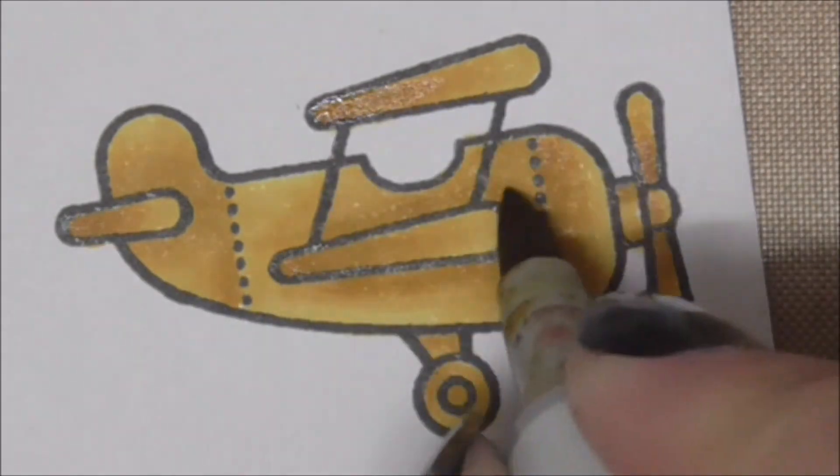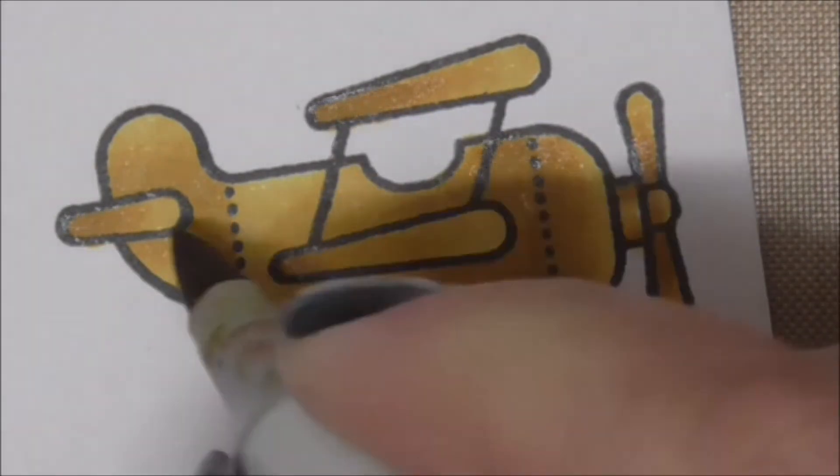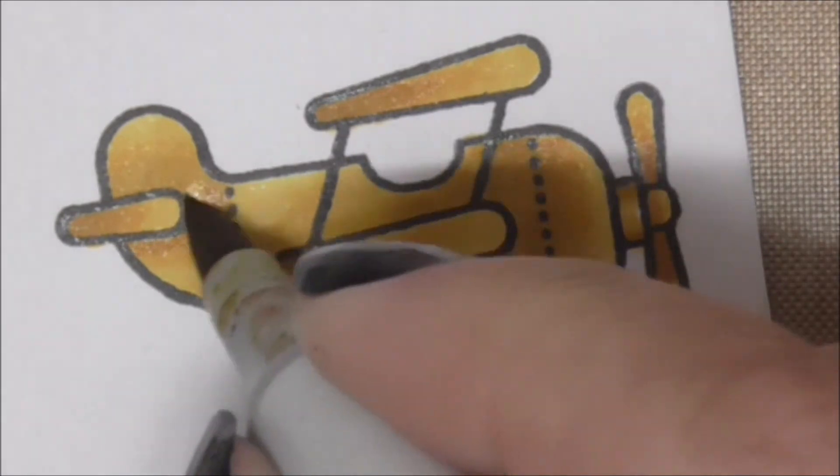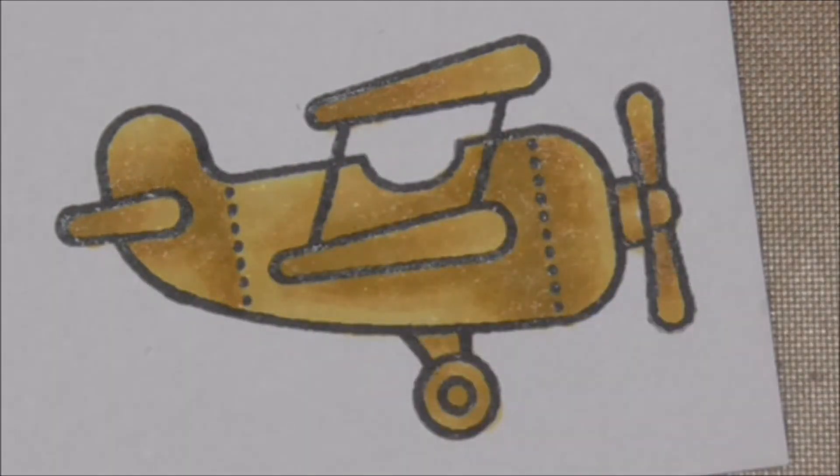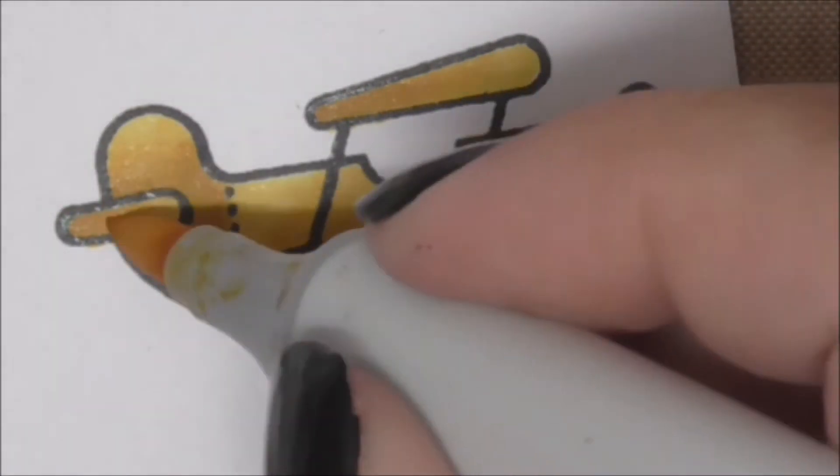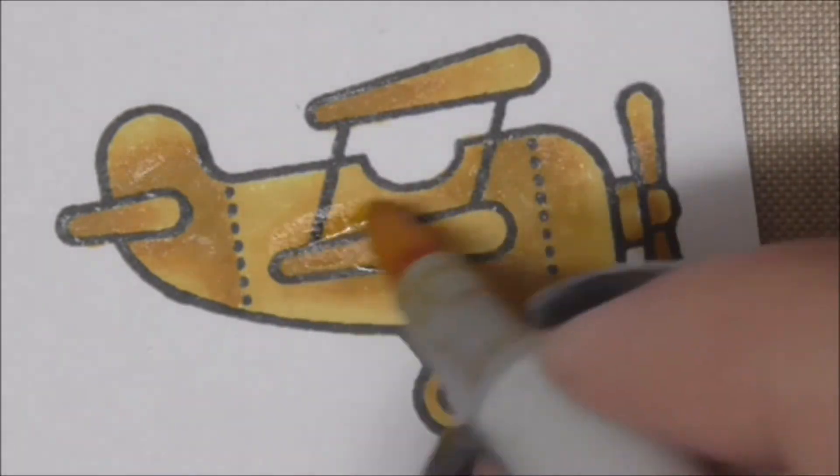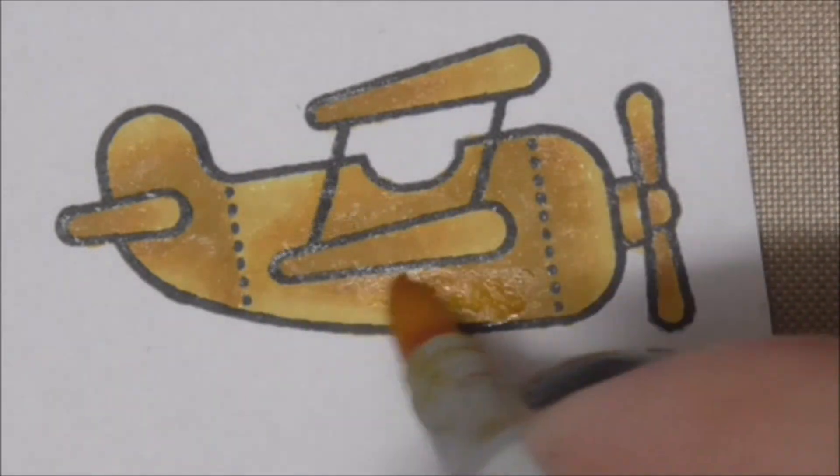Unless you're coloring an entire area, I say you can rework an image. So I'm just deepening the shadows by adding a little more Y26, softening those edges with the Y23, and this is traditional coloring.